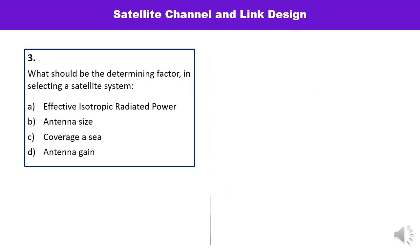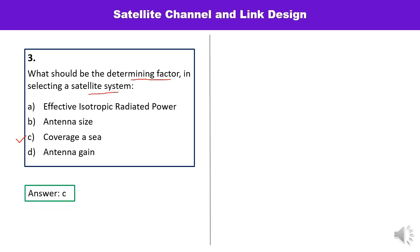Third question: what should be the determining factor in selecting a satellite system? The options are effective isotropic radiated power, antenna size, coverage area, and antenna gain. C — coverage area — is the correct option, as it is the most important factor to consider.